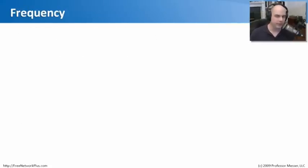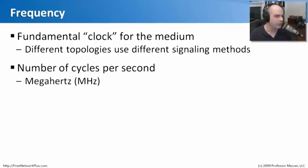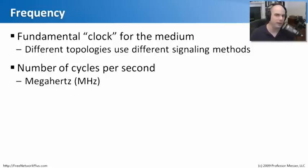Let's start with frequency. Frequency is really what we call a clock speed for a medium. There's a fundamental clock that keeps everything in synchronization whenever you're sending traffic across a network. Different topologies use different methods as they're signaling to make sure that each side is synchronized. We usually refer to the frequency in cycles per second, or hertz — in networking, usually megahertz, which is millions of cycles per second, or even gigahertz.